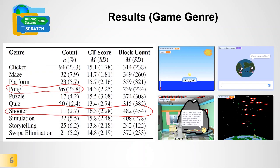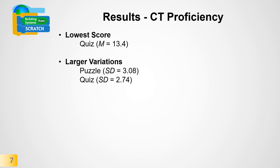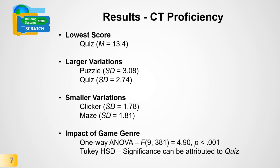Let's see if game genre had an impact on the final score in computational thinking proficiency as assessed by Dr. Scratch. The lowest score was produced by Quiz Games with a mean score of 13.4. Puzzle and Quiz Games showed the larger variations, while Clicker and Maze Games showed the smaller variations. A one-way ANOVA found that game genre has a significant impact on the final CT score; a post-hoc test attributed this significance to quiz games, suggesting that designing quiz games may not be advisable from a computational thinking learning perspective.